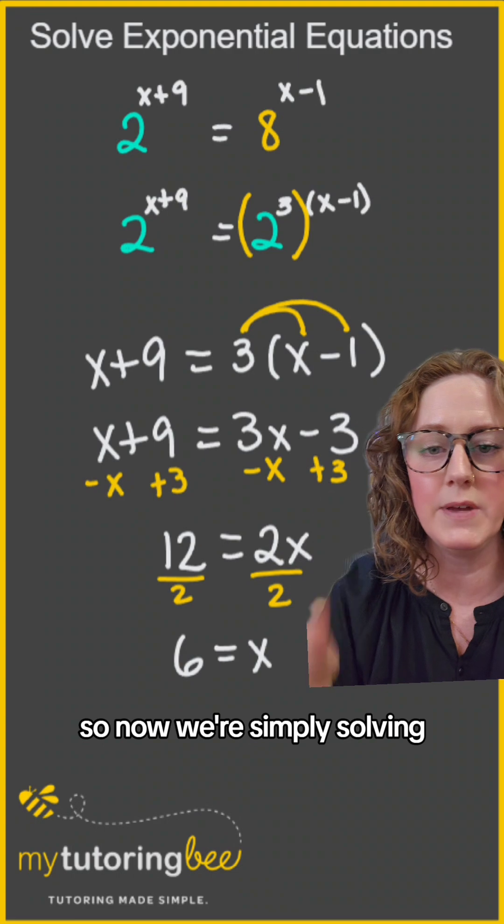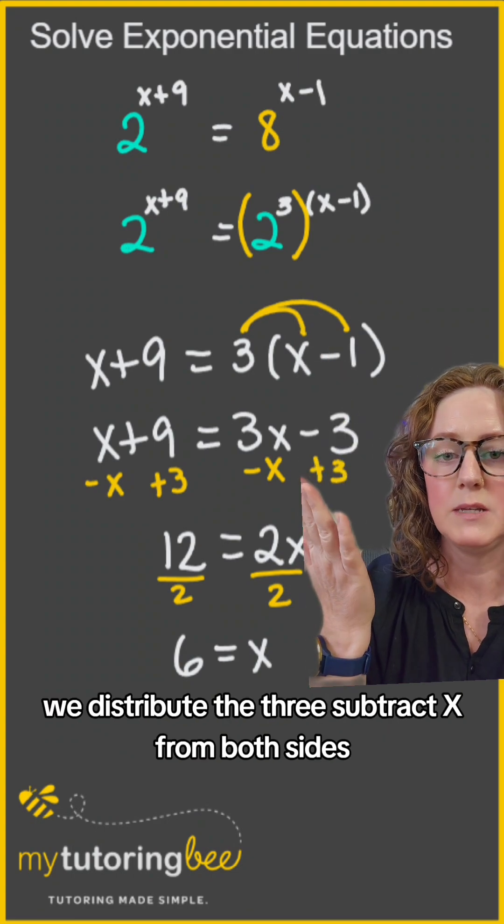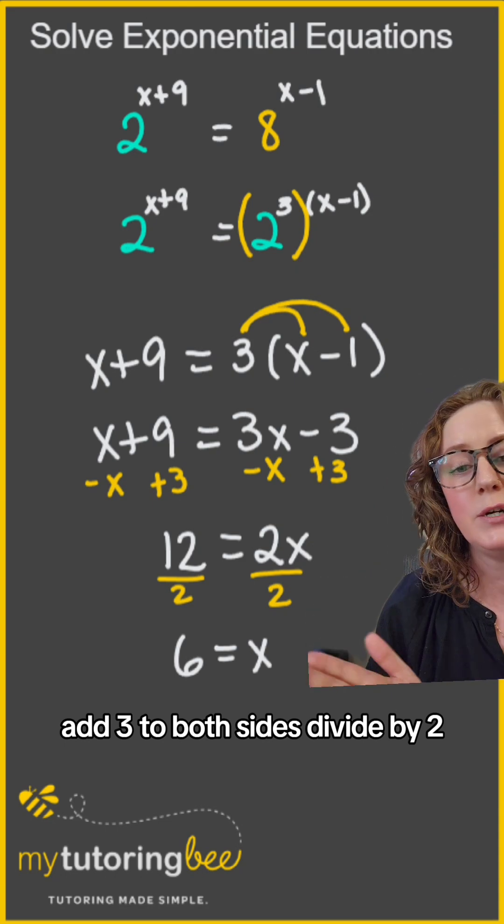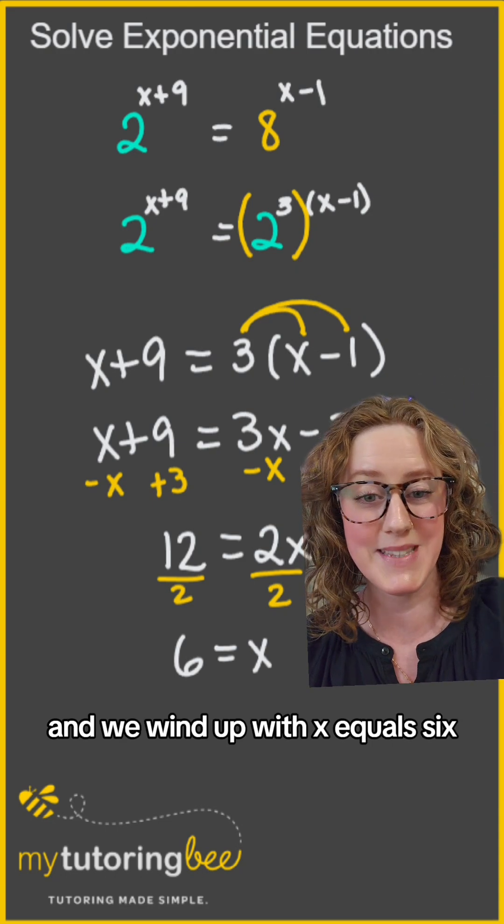So now we're simply solving. We distribute the 3, subtract x from both sides, add 3 to both sides, divide by 2, and we wind up with x equals 6.